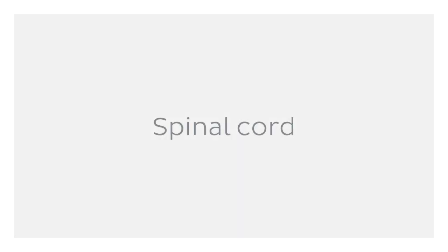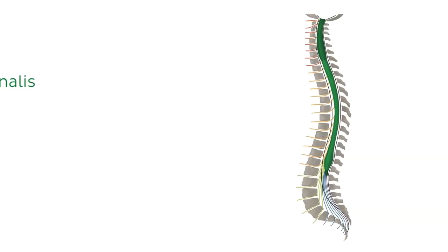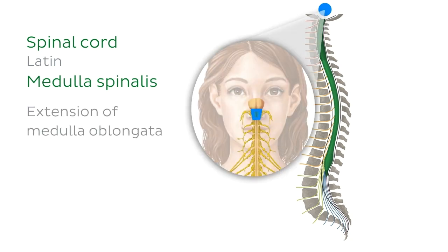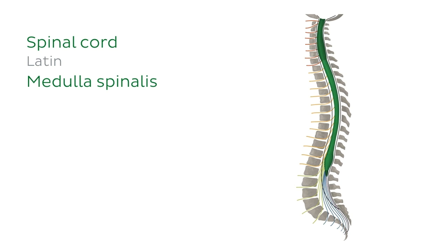Now let's turn our attention to the basic gross anatomy of the spinal cord. The spinal cord is a long cylindrical structure which starts off as an extension of the medulla oblongata of the brainstem and occupies the vertebral canal along much of the vertebral column.